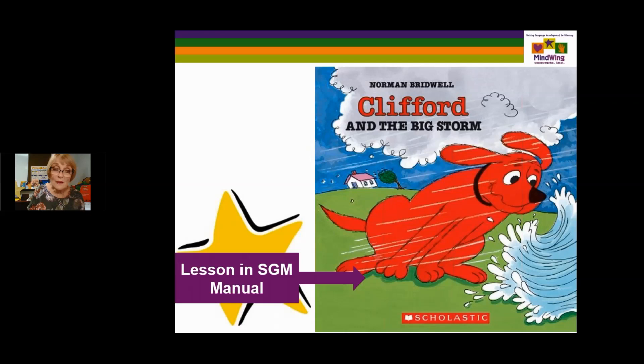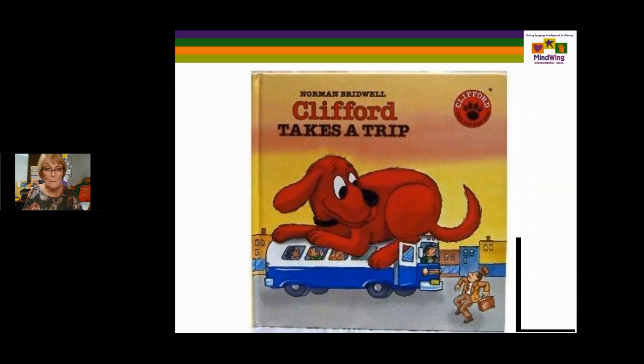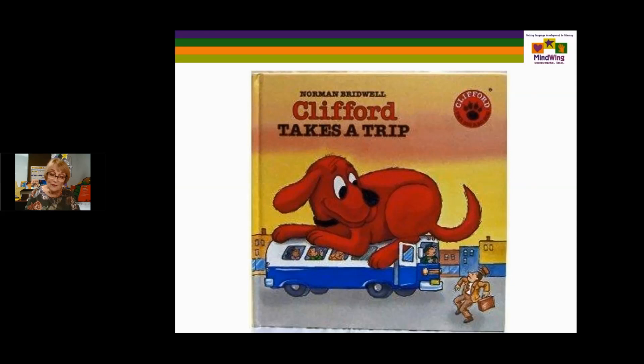Clifford and the Big Storm is also about storms. What I was using it for is that there are multiple kickoffs, each one signaling a new episode that Clifford had to tend to. It's analyzed in great detail over ten pages in the Story Grammar Marker Manual and it's also on our website. Clifford Takes a Trip is another Clifford where he overcomes many kickoffs embedded in one another to join his family. This shows the complexity of narrative text.